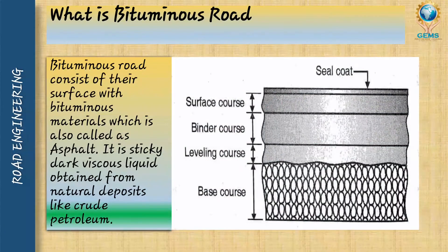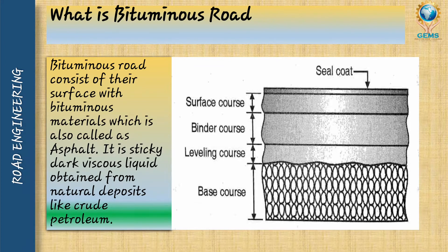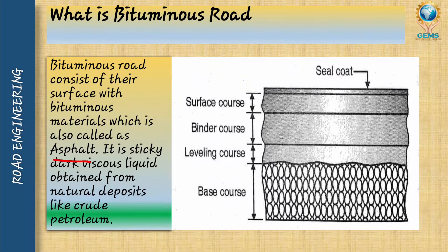First of all, we will see what is bituminous road. Bituminous road consists of a surface with bituminous material, which is also called as asphalt. The material which bituminous road contains is also called as asphalt. It is sticky, dark, viscous liquid, obtained from natural deposits like crude petroleum.